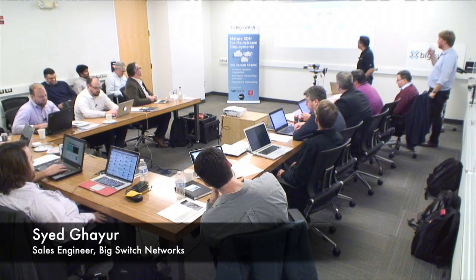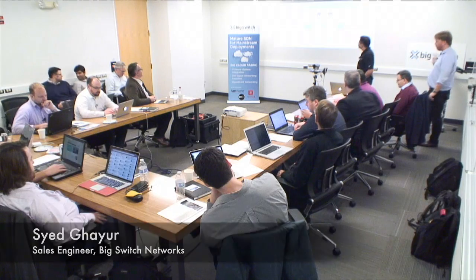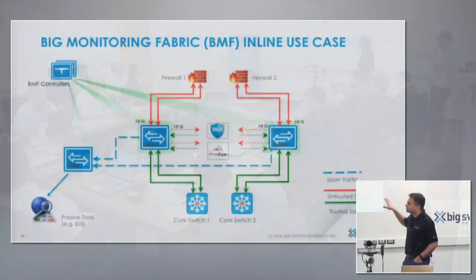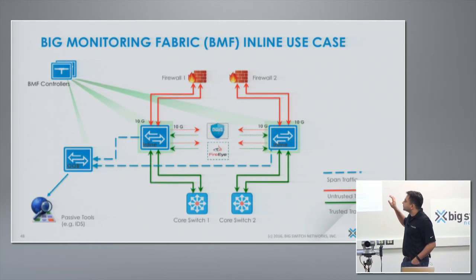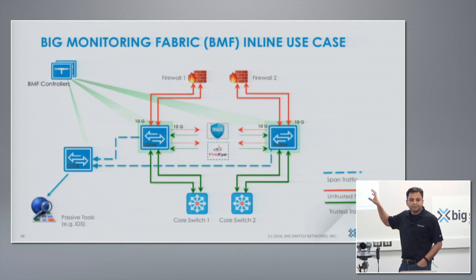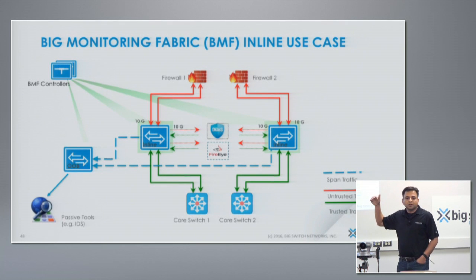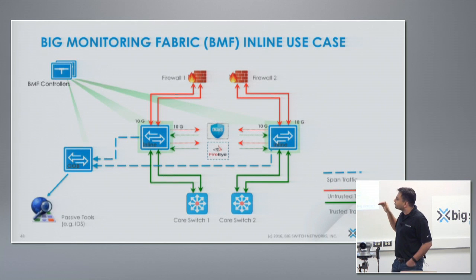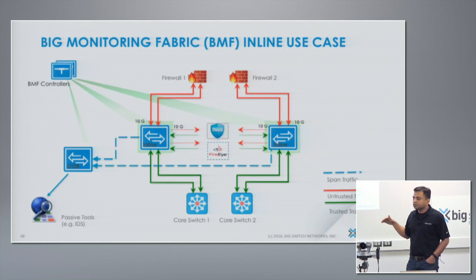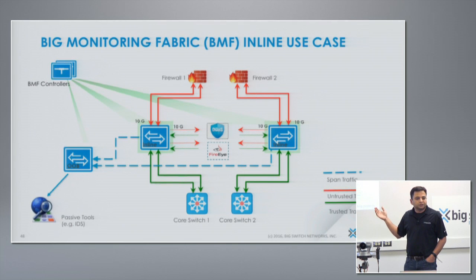Today I will go through an inline demo, and this is one of the use cases which a customer has deployed. You can see that the same BMF controllers — big monitoring fabric controllers — can manage both out-of-band and in-band switches. In this case, the traffic coming behind the firewall is still considered untrusted, so it has to go to advanced security appliances like IPS or DDoS appliances before going to the core switches.